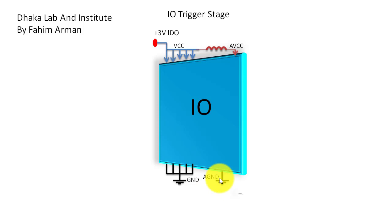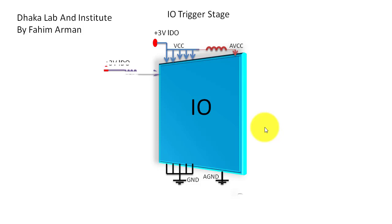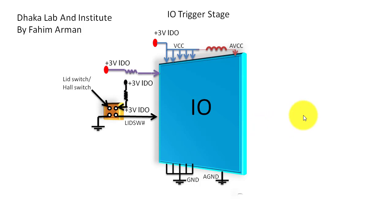AGND is for ABCC and GND is for BCC. There will be another voltage entering into the IO chip named plus 3 volt LDO, and this voltage will enter into the IO chip through a pull-up resistor. We can also see there is another function — that is the lid switch or halt switch.